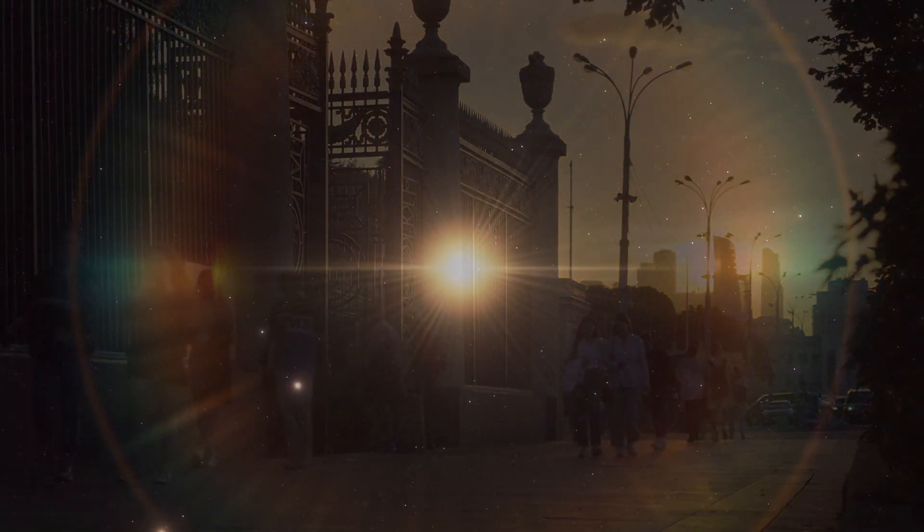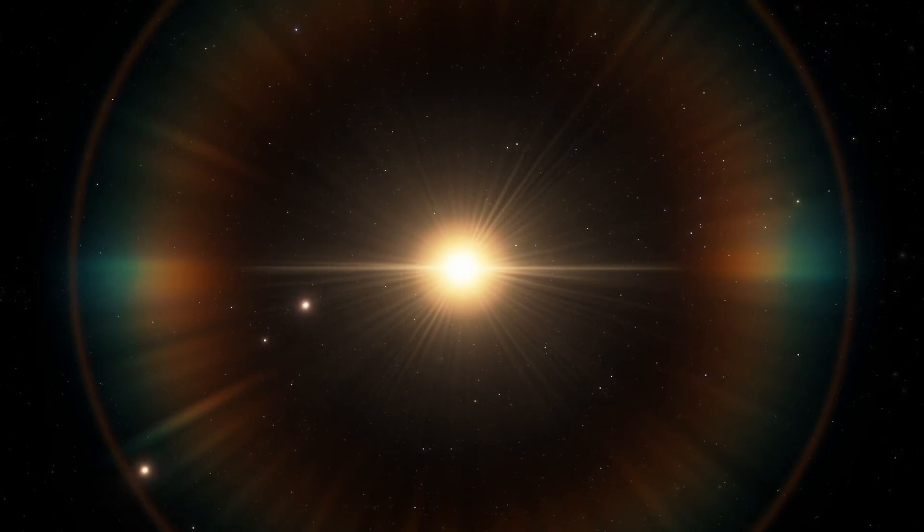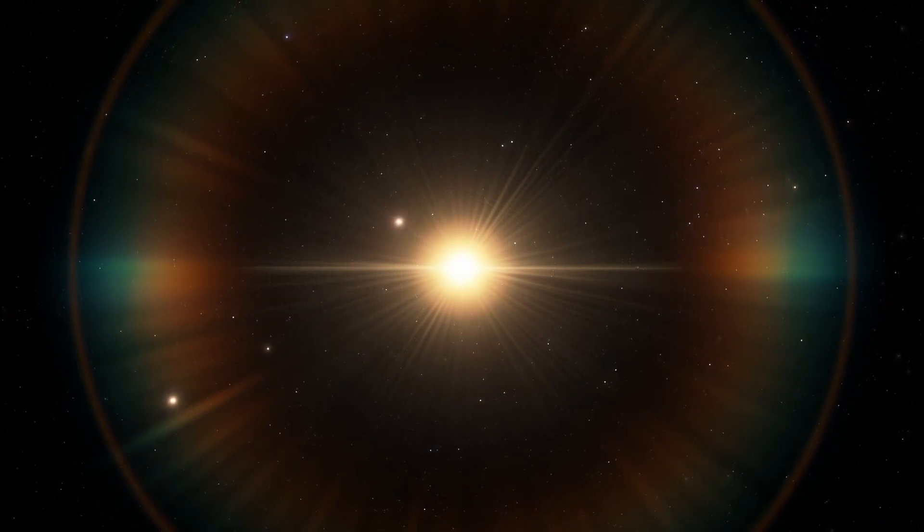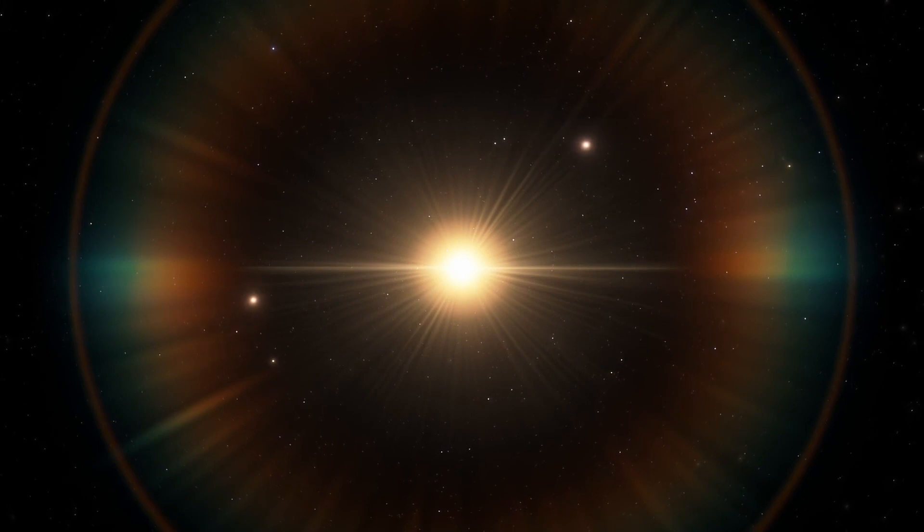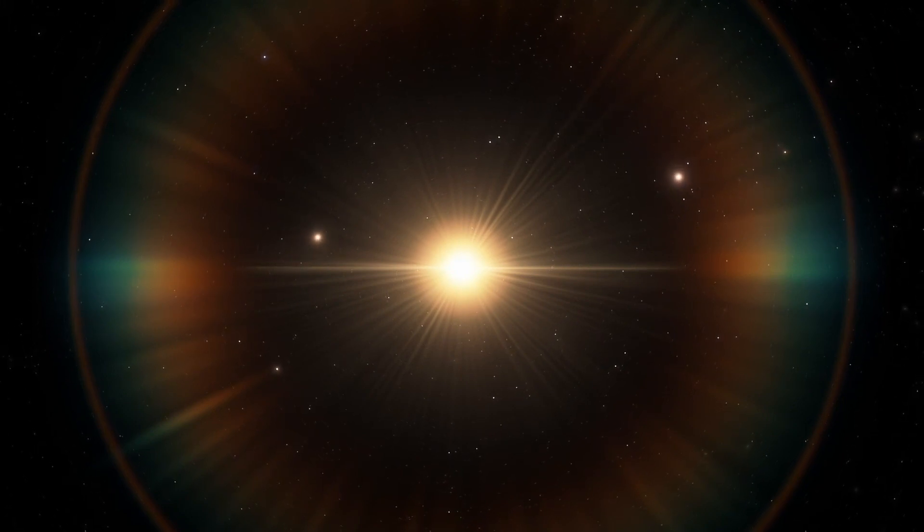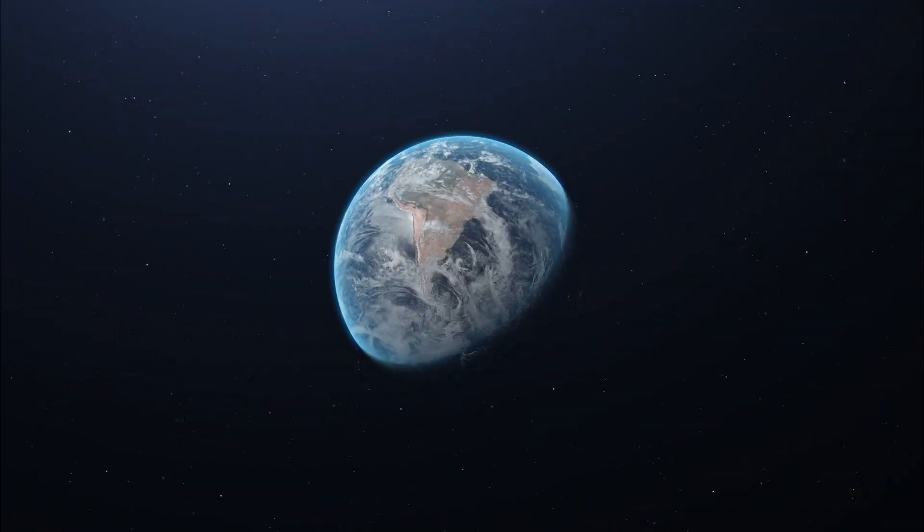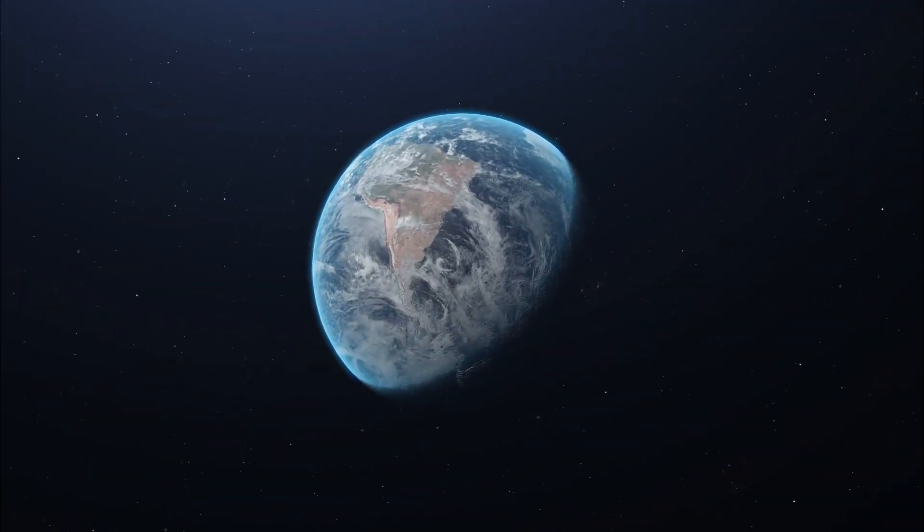The measurement we use is the rotation of our planet and the number of trips the Earth makes around the sun. One rotation is a day, one trip around the sun is a year. Time is a measurement of the distance traveled and the movement of our home.